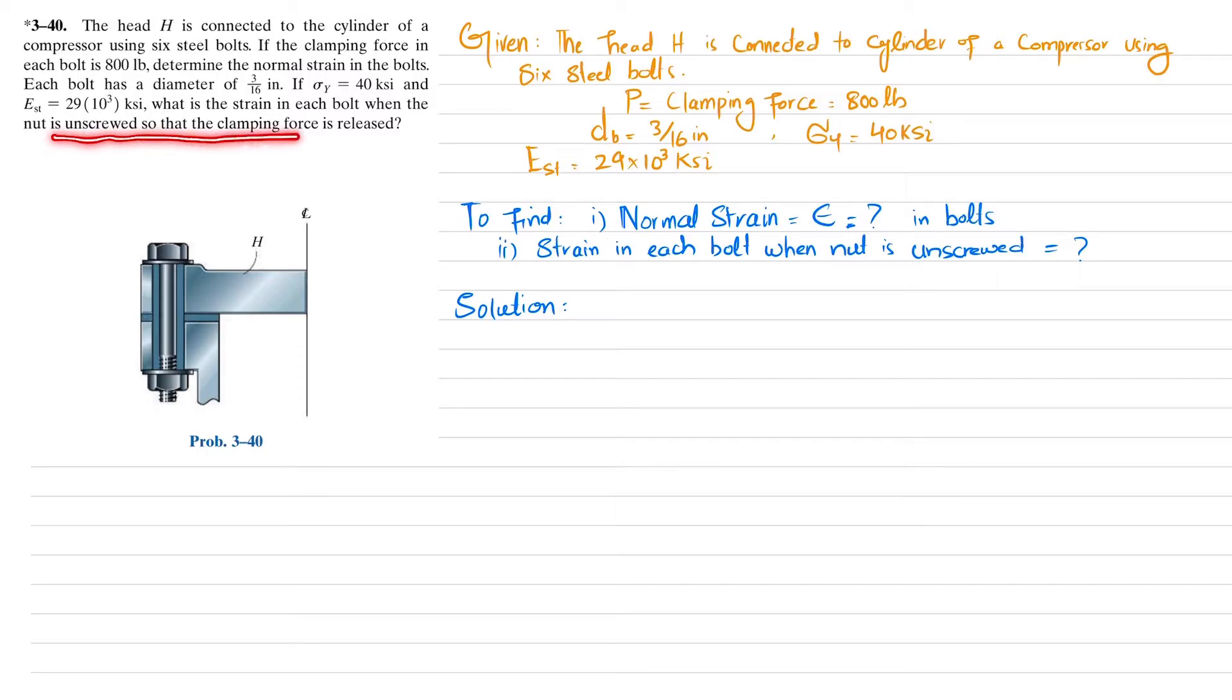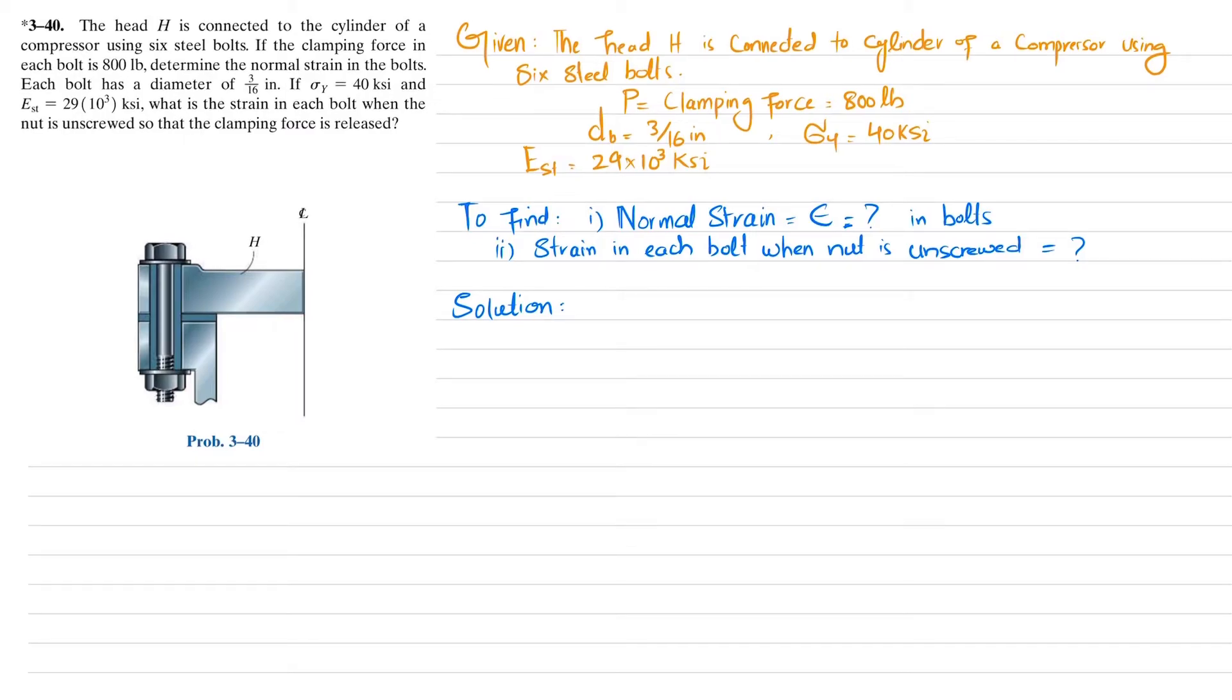You can see this is head H connected with the compressor body through a bolt, and there are six bolts used for the connection. The clamping force is 800 pounds, diameter of bolt is 3/16 inch, yield strength is 40 ksi, and modulus of elasticity is given. First, we have to find the normal strain in the bolt.